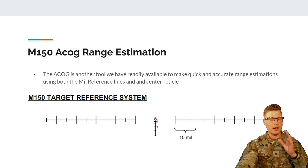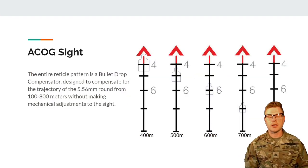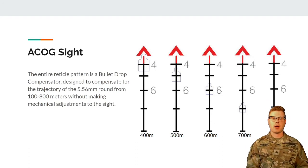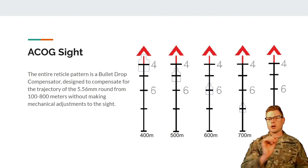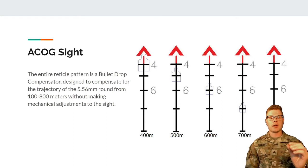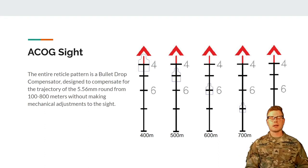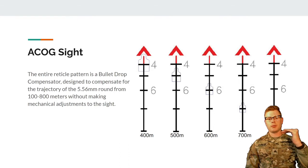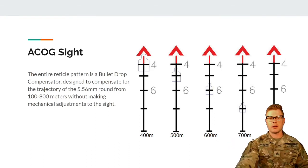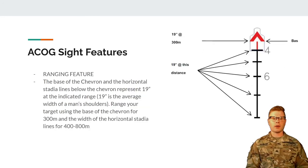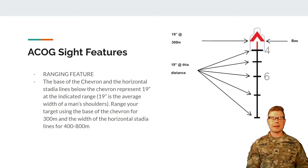I'll talk about both because we're combining a little bit of different doctrines here. The center line reticle — the entire ACOG reticle pattern is a bullet drop compensator designed to compensate for the trajectory of the 5.56mm round from 100 to 800 meters without making mechanical adjustments to the sights. The ranging feature: the base of the chevron and the horizontal stadia lines below the chevron represent 19 inches at the indicated range. The 19 inches is the average width of a man's shoulders. Range your target using the base of the chevron for 300 meters and the width of the horizontal stadia lines for 400 to 800 meters.